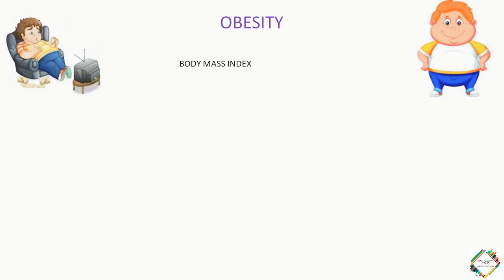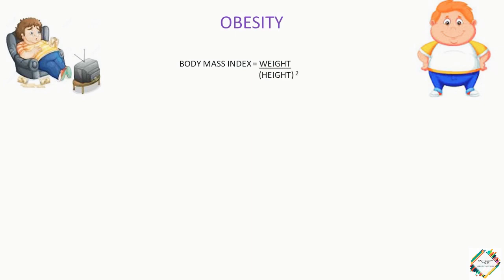So what is this body mass index, the BMI? It is a person's weight in kilograms divided by the square of height in meters. A high BMI would be an indicator of high body fatness, and this parameter can be used to screen for weight categories that may lead to health problems, but it is not a diagnostic of body fatness or health of an individual.